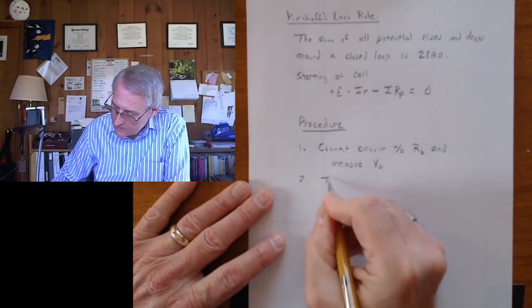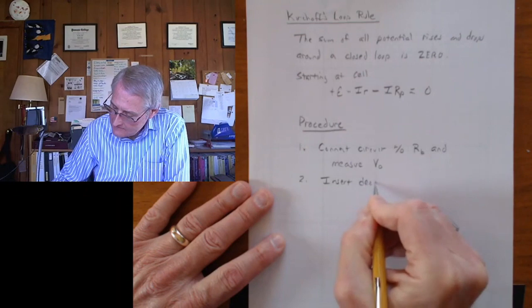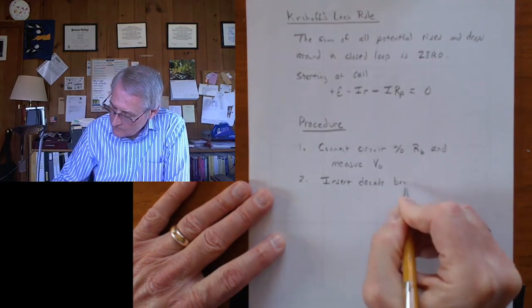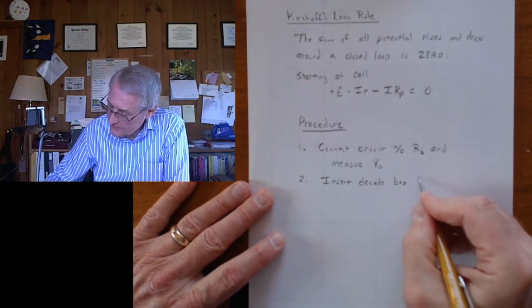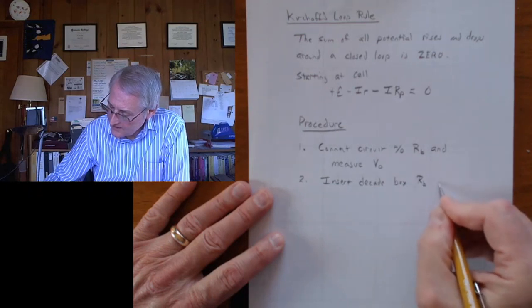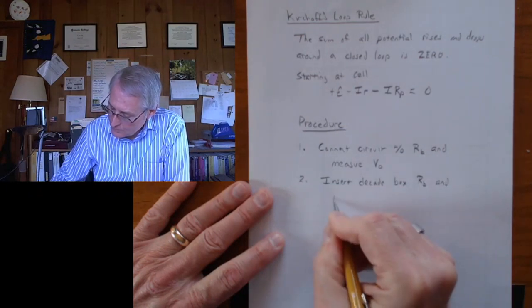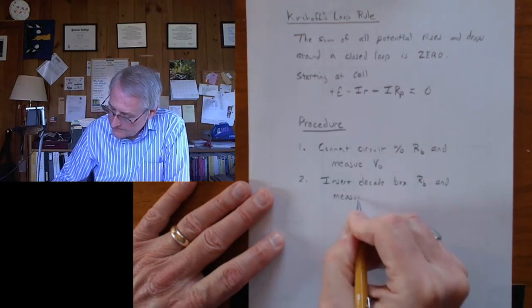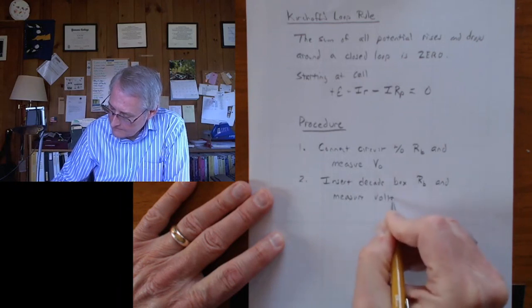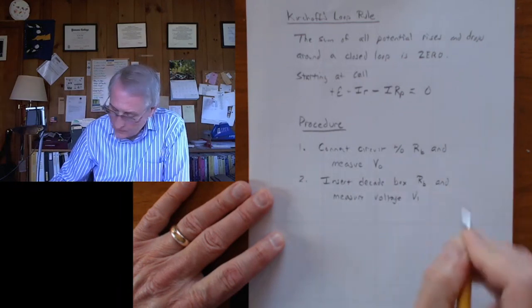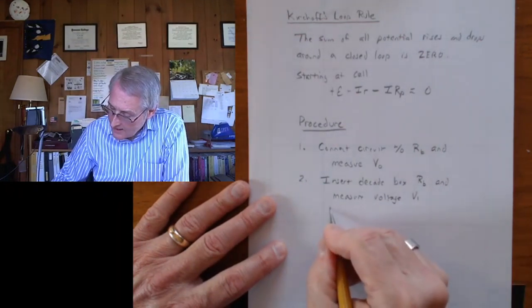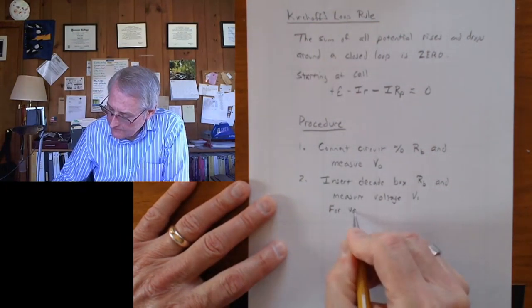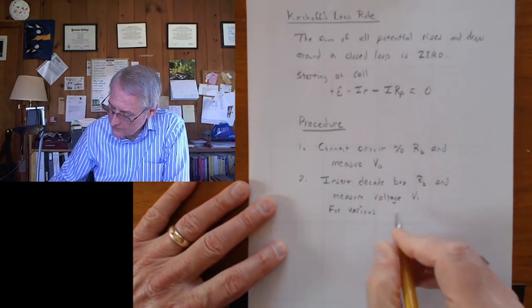Then we'll insert the decade box. It has a resistance R sub B. And then we'll measure the voltage. And we'll call that V1. And we'll do that for various values of the resistance.